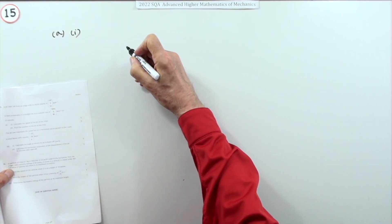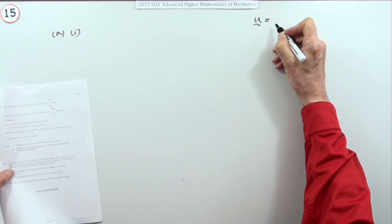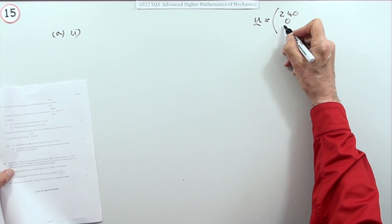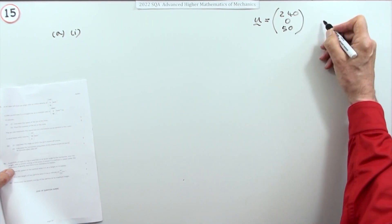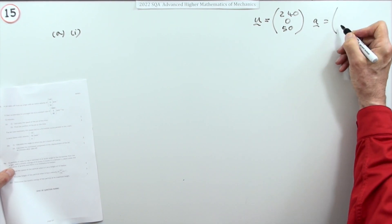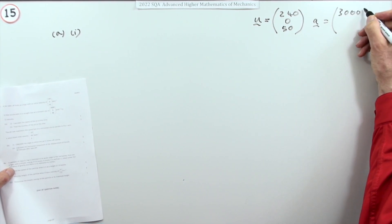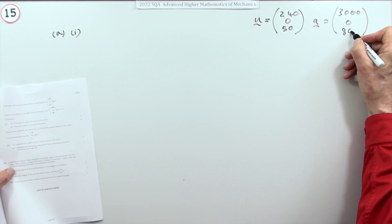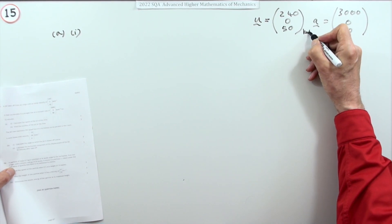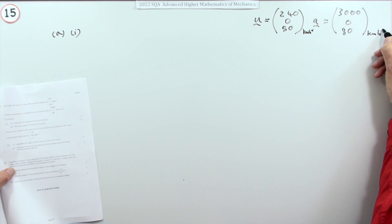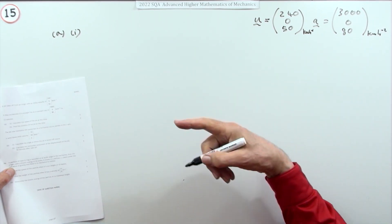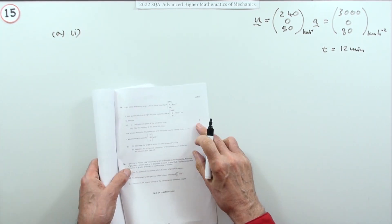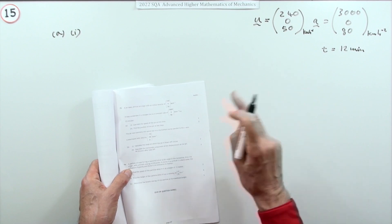I'll put the information over here. Initial velocity: 240 in the x direction, 0 in the y direction, 50 straight up in the z direction. Acceleration vector: 3000 in the x direction, 0 in the y direction, and 80 in the vertical direction. That's kilometers per hour and kilometers per hour squared. For t equals 12 minutes, what's the speed?